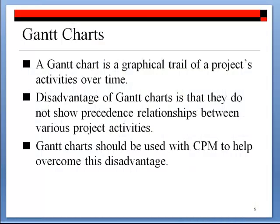A Gantt chart is a graphical portrayal of a project's activities over time. There are many different variations of Gantt charts, depending on what the project manager is trying to accomplish. We'll construct a basic Gantt chart based on the previous CPM example. A Gantt chart is typically used to monitor the progress of various activities — helping project managers know which activities are behind schedule, in progress, completed, or about to begin. One disadvantage is that Gantt charts do not show the precedence relationships between activities, so they should be used with CPM to overcome this.